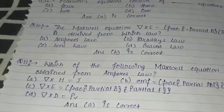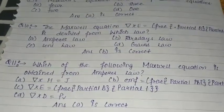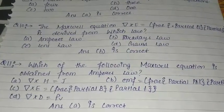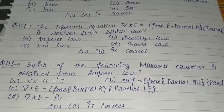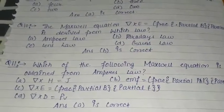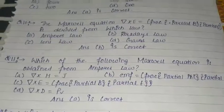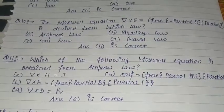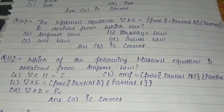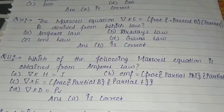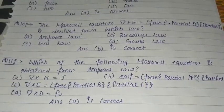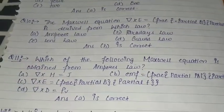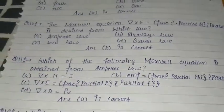Question number eleven: Which of the following Maxwell's equations is obtained from Ampere's law? From these four options, option A is the correct answer: del cross H is equal to J, for the Maxwell's equation obtained from Ampere's law.